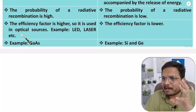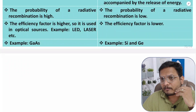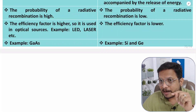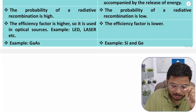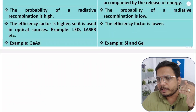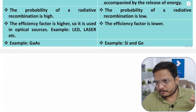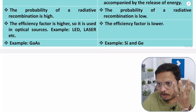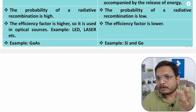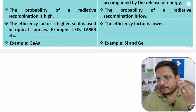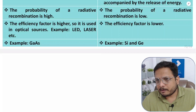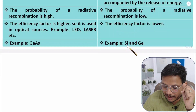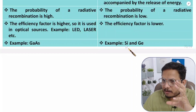In optical sources, we want to have higher radiative recombination. For example, if you have an LED, the purpose of an LED is that it should glow, and to have that glow you need to have radiative recombination. If that happens, you will have higher intensity of light. But the probability of radiative recombination with indirect band gap is low. That's why we don't use silicon and germanium type materials in optical sources. While gallium arsenide, which is a direct band gap material, is used.